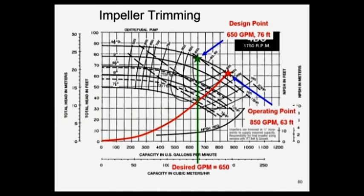We dropped the horsepower way down, we leave our throttling valve wide open. If we trim that impeller to the proper size, what happens cost-wise?